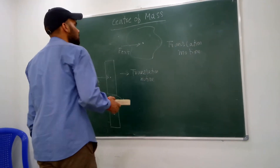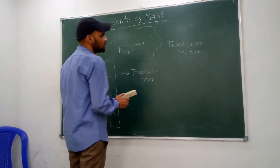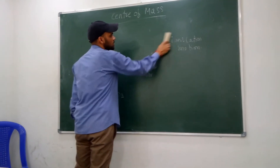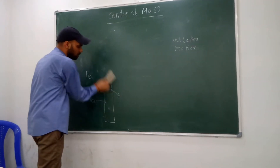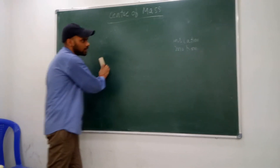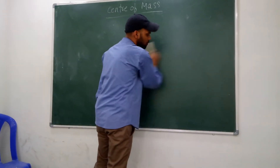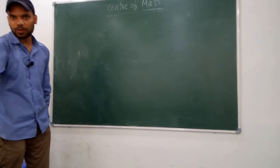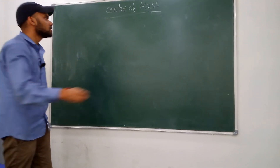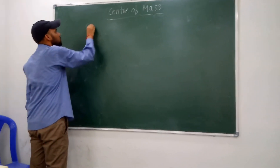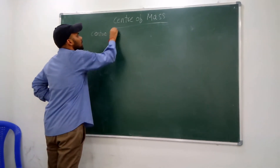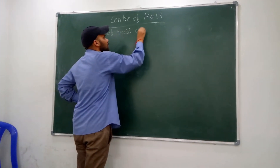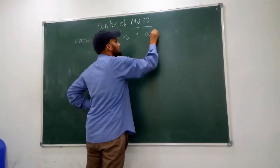So how can you find the center of mass of any rigid body? A rigid body is an incompressible body which cannot be compressed further and which contains a number N of particles. Suppose you have a rigid body — now we will write the formula for the center of mass of any rigid system.